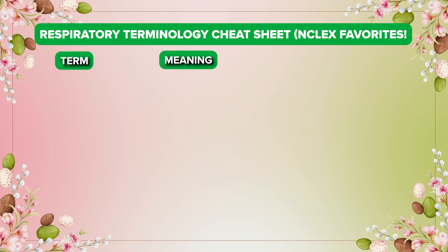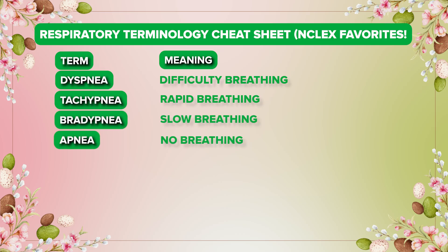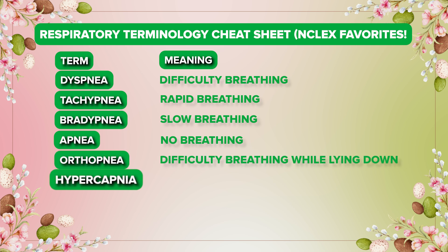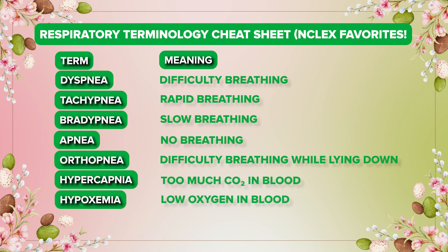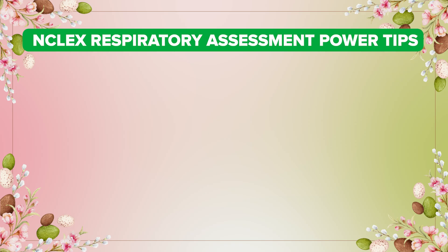Now for respiratory terminology — another NCLEX favorite. Dyspnea means difficulty breathing. Tachypnea means rapid breathing. Bradypnea means slow breathing. Apnea means no breathing. Orthopnea means difficulty breathing when lying down. Hypercapnia means too much CO2 in the blood. Hypoxemia means low oxygen in the blood. Pro tip: if you see hypoxemia on an NCLEX question, always think about oxygen first.